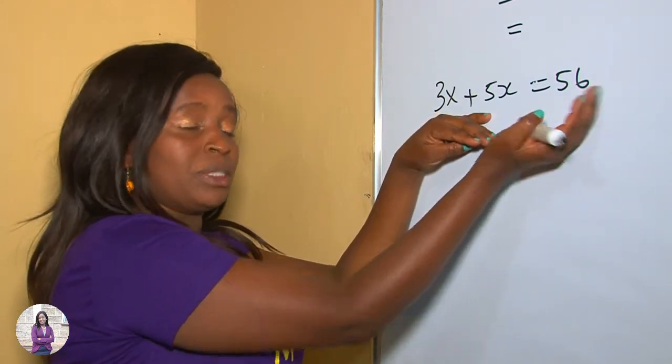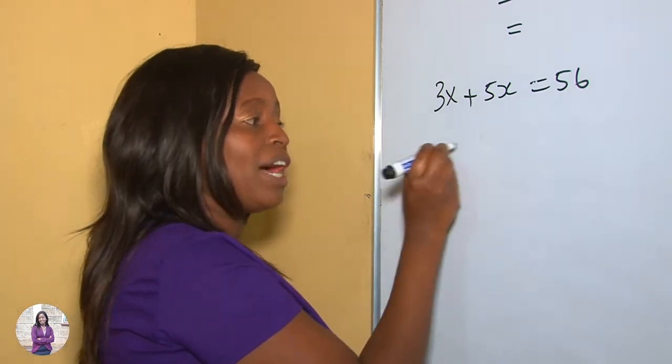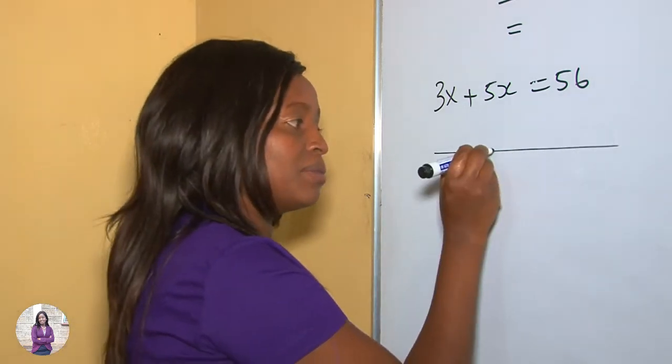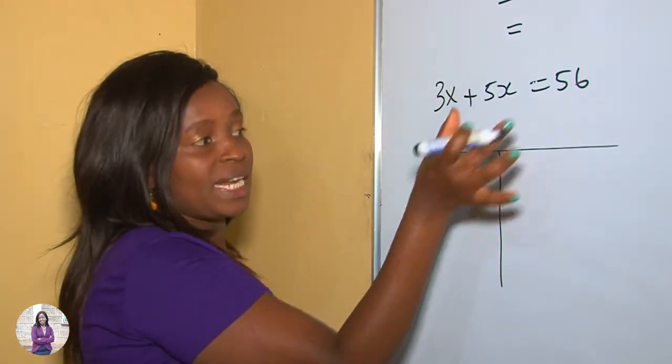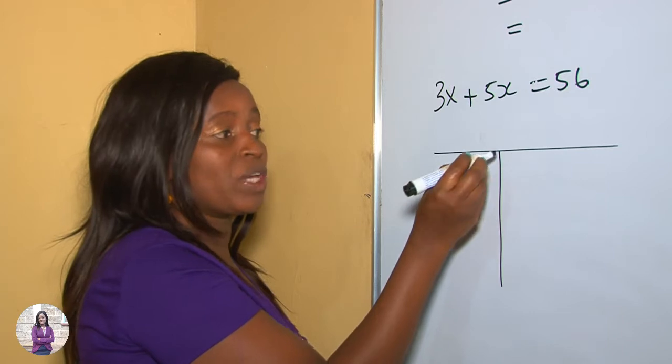Let's try to do it practically. Let's say we have a weighing scale. To represent this on a weighing scale, the weighing scale must be balanced. Because we are saying, whatever is on the left is equal to whatever is on the right.